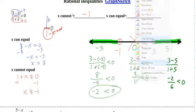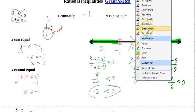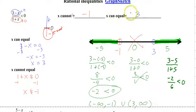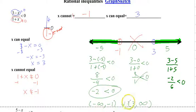And that's our answer. We have from negative infinity to negative 1, union, parenthesis 3 to infinity. The ones where the numerator can equal 0 — if this was less than or equal to, that would be a bracket. But since it's strictly less than, it's an open circle, which makes it a parenthesis.